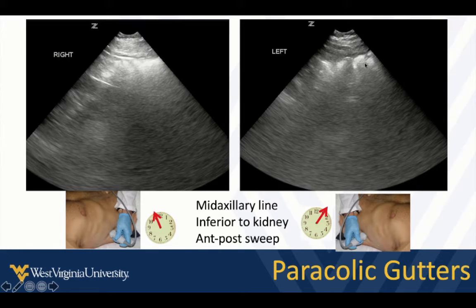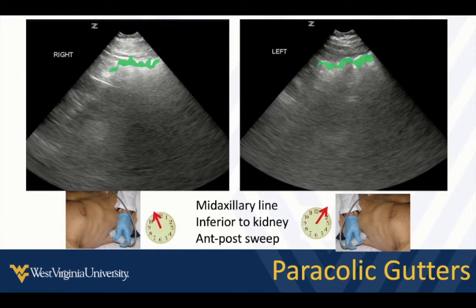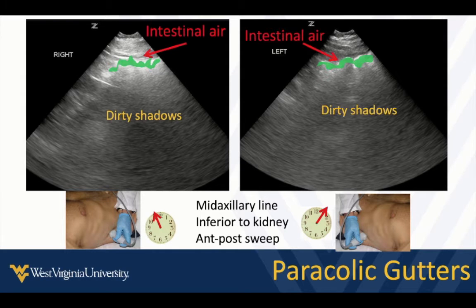These may be the first areas to fill with fluid in someone who's bleeding in their abdomen or even accumulating ascites. That's just the bowel outline, and when we see that, we know we're examining the paracolic gutter.